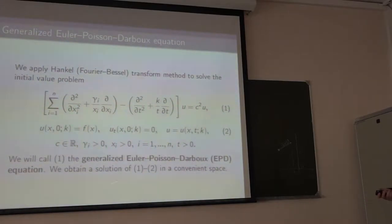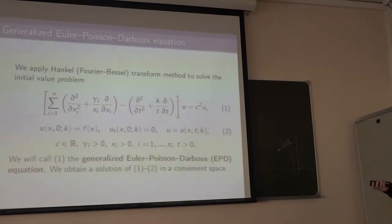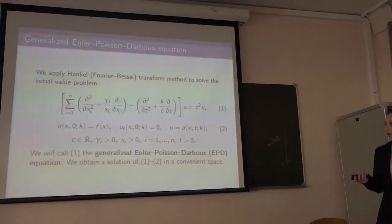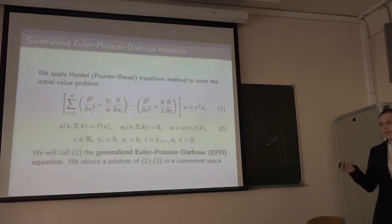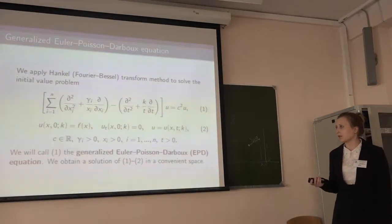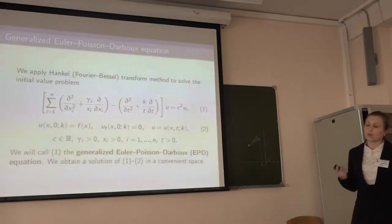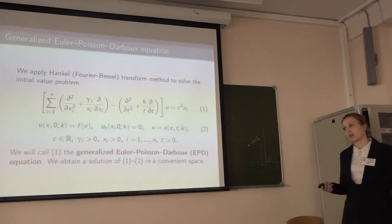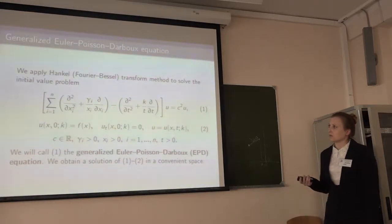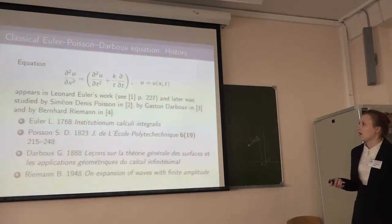When k is positive, the solution of this problem will be unique. For negative k, it will not be unique, but we can still see how the solution of this problem depends on some functions. We will obtain one solution and an additional expression which can be added to this solution.